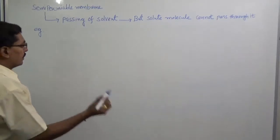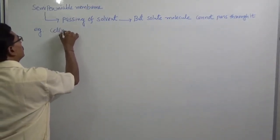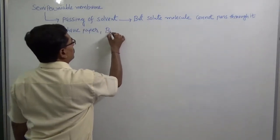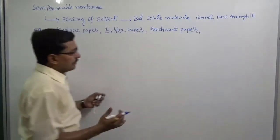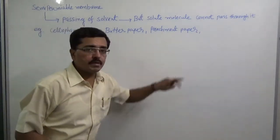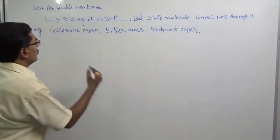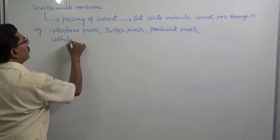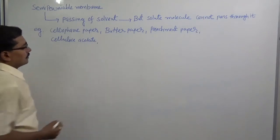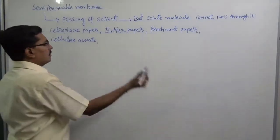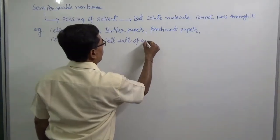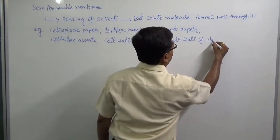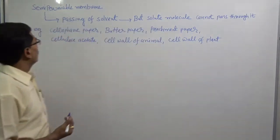There are a lot of examples of semi-permeable membranes. Different types of paper such as cellophane paper, butter paper, and parchment paper are examples of semi-permeable membranes. Some are synthesized cellulose-containing materials — for example, cellulose acetate, which is used in an RO plant. Similarly, the cell wall of animals and plants are also examples of semi-permeable membranes.